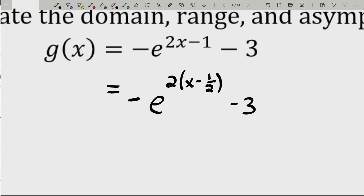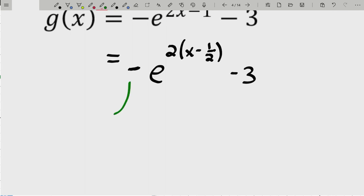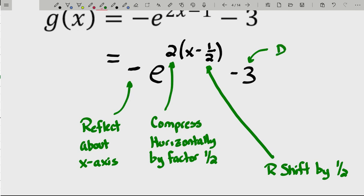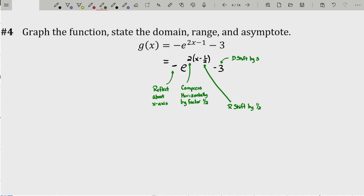The negative sign reflects about the x-axis. The 2 means compress horizontally by a factor of 1/2, multiplying all x values by 1/2. Then we have a right shift by 1/2 and a down shift by 3. We have everything needed to graph this exponential function.